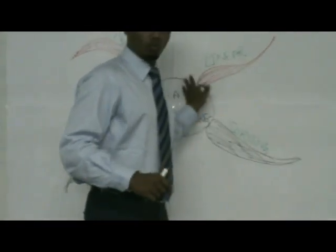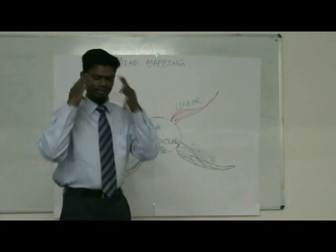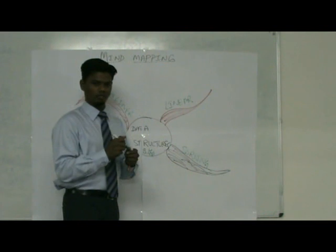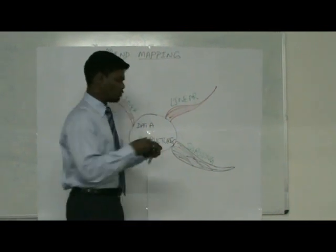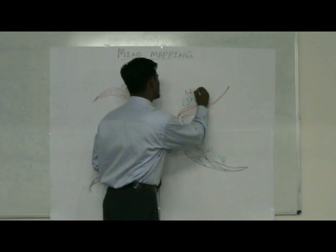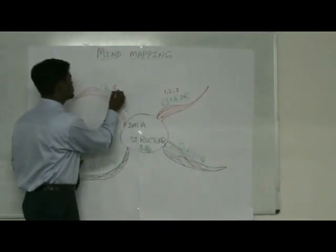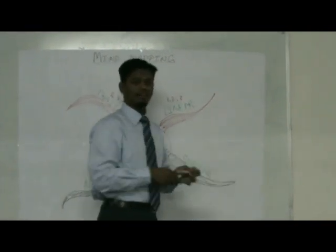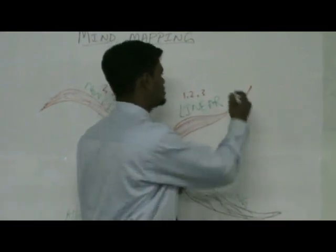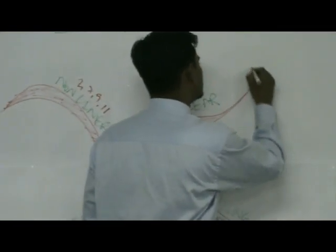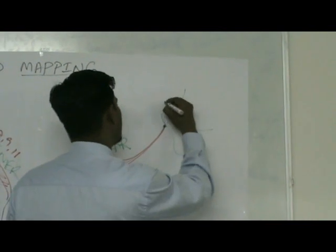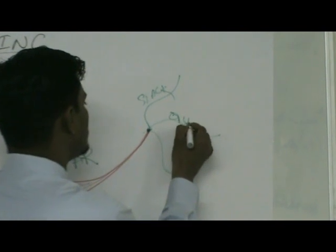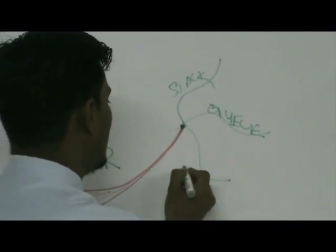Each word should have an association with a picture — that is what mind mapping is. You map the whole subject and also have pictures associated with it. For example, if it is a linear structure we give something like 1, 2, 3. If it is non-linear we give it randomly like 2, 7, 9, 11. So in linear, you can take the basic three things: stacks, queues, and lists.